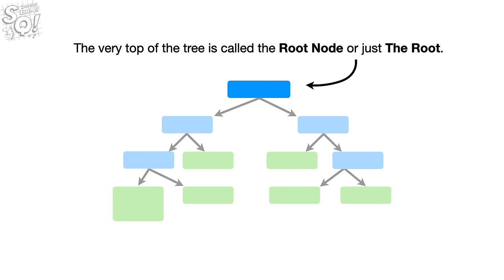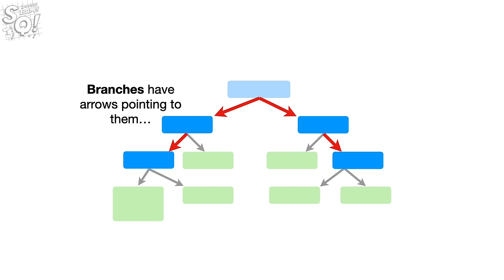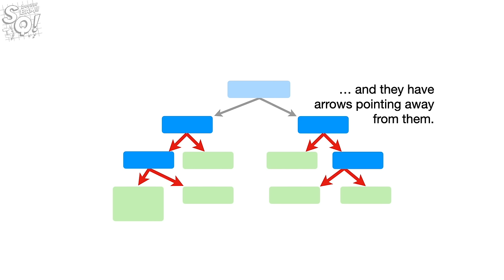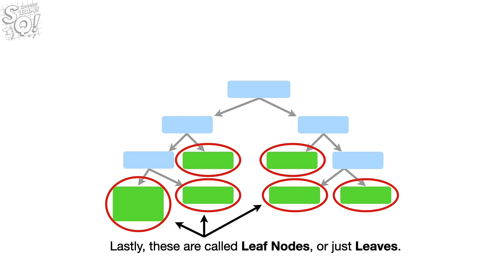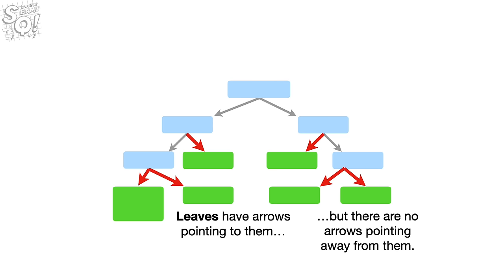Terminology alert! The very top of the tree is called the root node, or just the root. These are called internal nodes, or branches. Branches have arrows pointing to them, and they have arrows pointing away from them. Lastly, these are called leaf nodes, or just leaves. Leaves have arrows pointing to them, but there are no arrows pointing away from them.